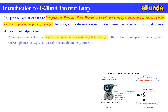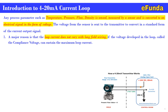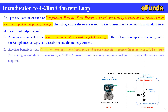A major reason for using 4 to 20 milliamp is that the loop current does not vary with long field wiring, provided the compliance voltage can sustain the maximum loop current. Another benefit is that the current loop has a low impedance and is not particularly susceptible to noise or EMI.